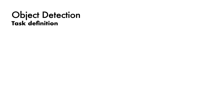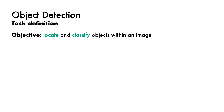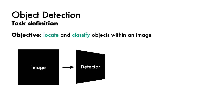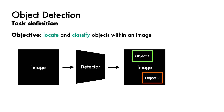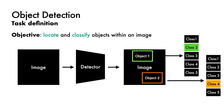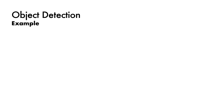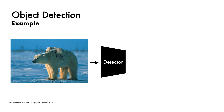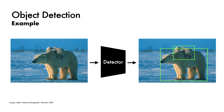Next, we have object detection. The objective here is to both locate and classify objects within an image. The image is passed to a detector which outputs a set of spatial regions and their corresponding classes. For example with polar bears, the task of the detector is to process the image and determine both the locations of the animals and assign them the correct class label.